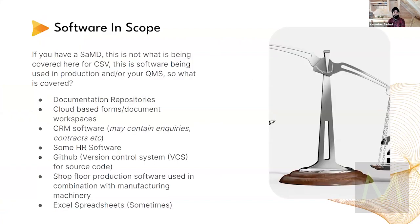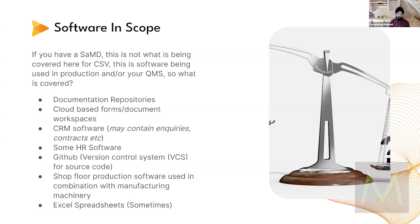Which software is in scope of software validation? If you have a software medical device — as Melissa mentioned earlier — that's not what we're covering here. This is software being used in the production and/or your quality management system. What's covered: document repositories — SharePoint, Google Drive, and internal servers. Where are you keeping your approved documentation, your draft documentation, your superseded documentation? That all needs to be validated. Cloud-based forms and document workspaces — if you're using cloud-based systems, those need to be validated.